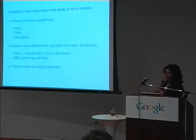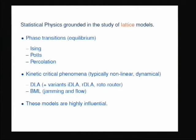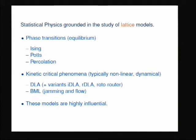Today I really want to focus on lattices and traditional statistical physics models, which are rooted in lattice models. So much of modern statistical physics involves critical phenomena and phase transitions. The prototype model showing a phase transition is the Ising model, extended by the Potts model. We're also interested in percolation on lattices, critical kinetic phenomena like diffusion-limited aggregation, and the Biham-Middleton-Levine model that I'll discuss today. These models are really highly influential — they shape our thought processes and give us grounding to move forward, and are really the cornerstone of modern statistical physics.